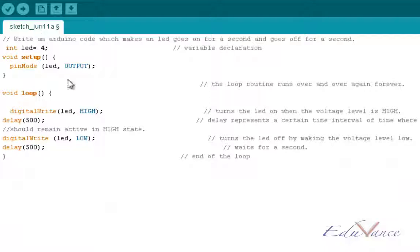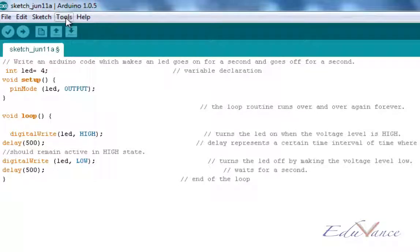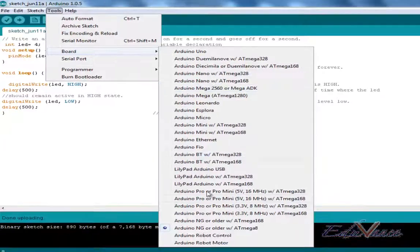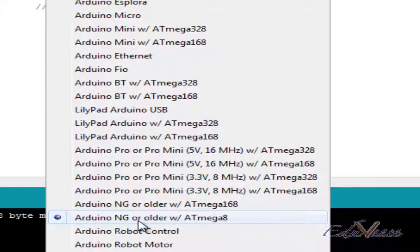So this is the program that we have. Now before you put the program on to the Arduino board, please confirm a few things. The board that you select must be the Arduino NG or older with ATmega8. Now, if you have a different Arduino board, you have to make sure you have selected the right Arduino board.